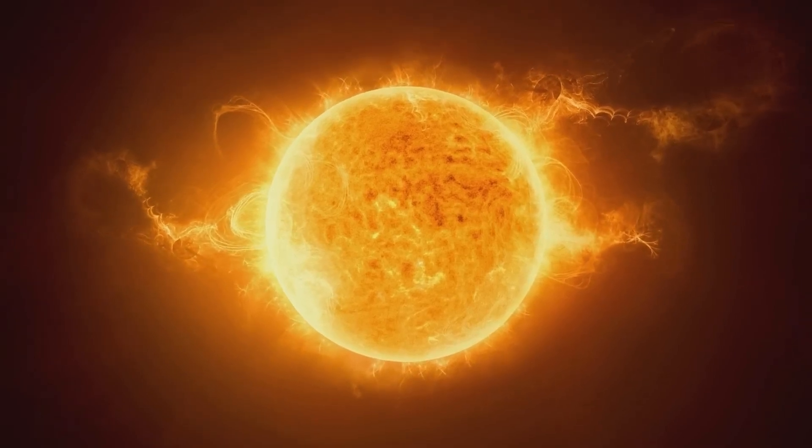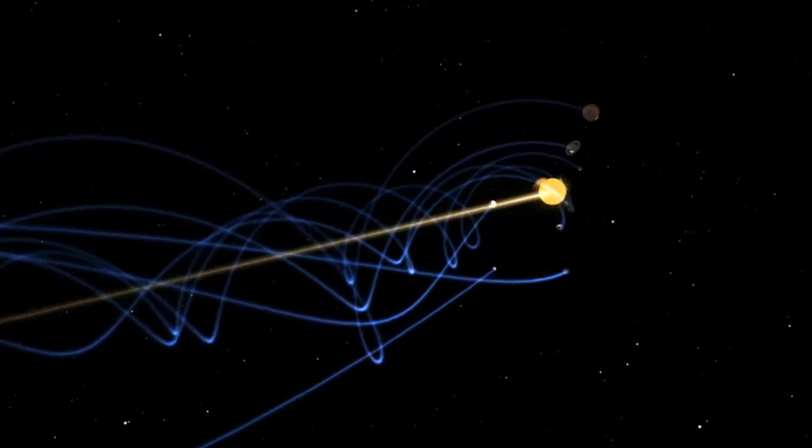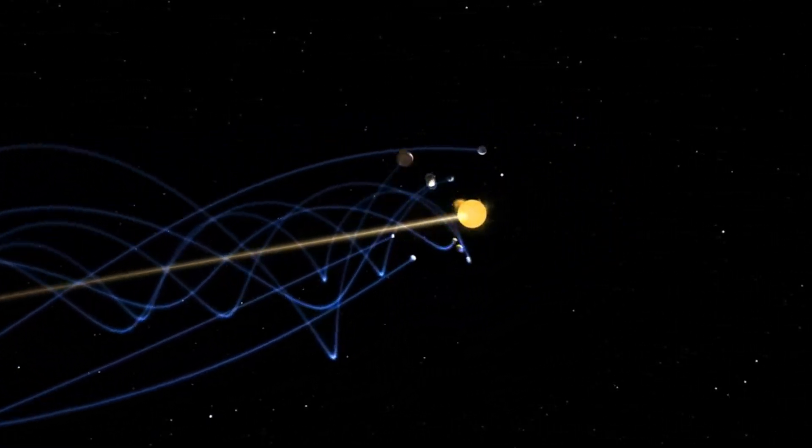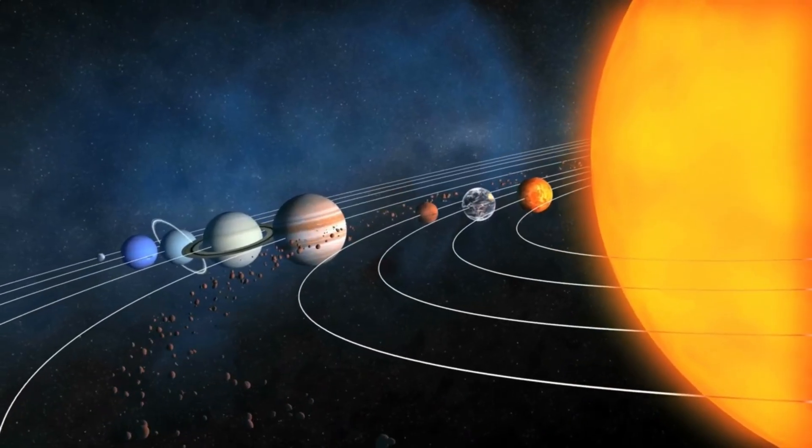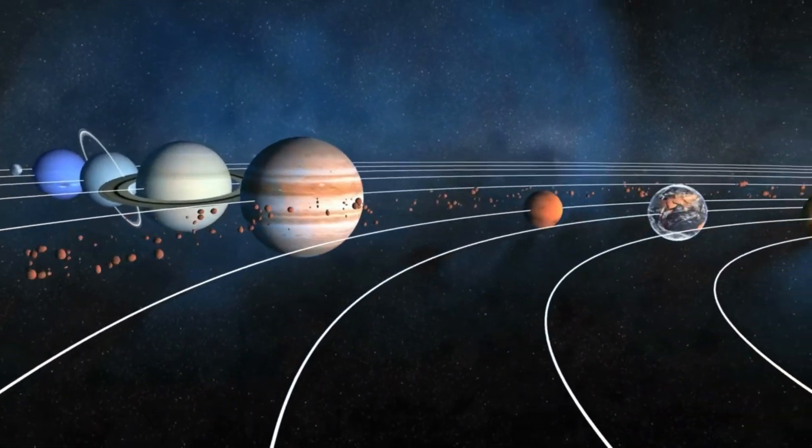So, if we want to understand how Earth is truly moving, we need to select the right reference frames. Let's begin with the one we commonly use, where the planets appear to orbit around a relatively stationary Sun.